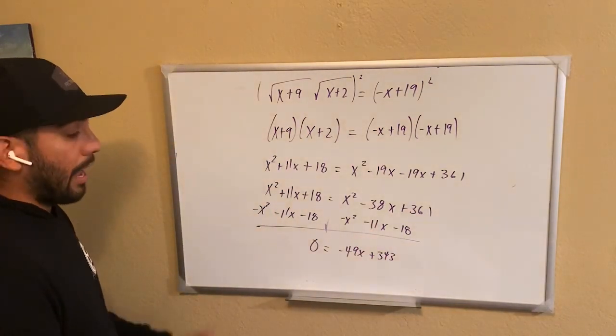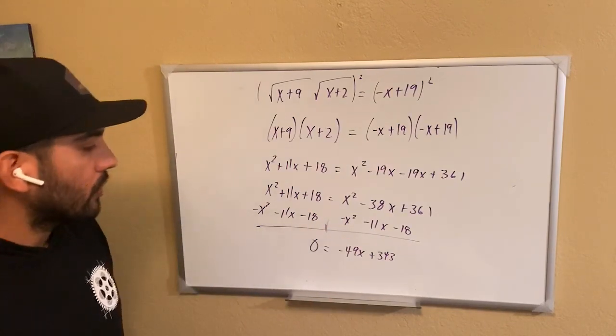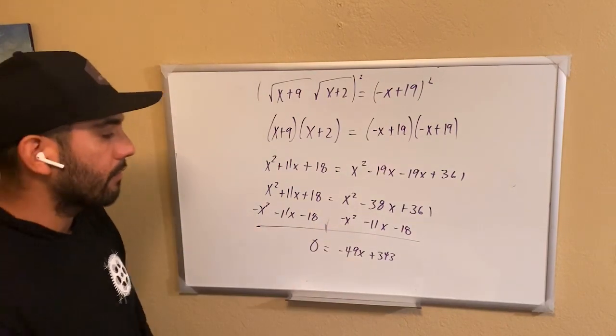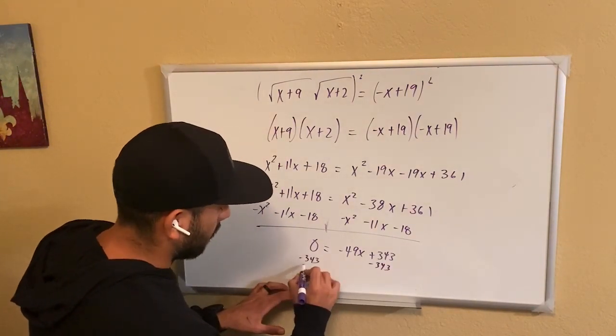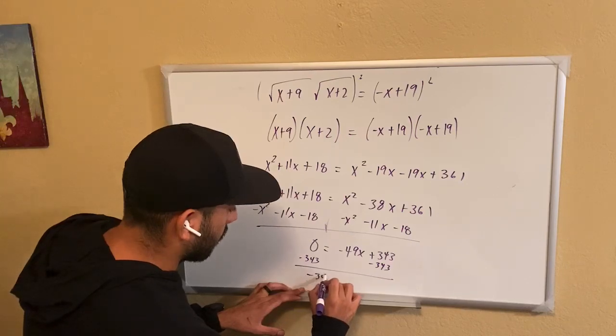All right, how do I solve for us? Just like any, you know, two-step equation. Let's bring the negative or the 343 to the other side. And I have negative 343.